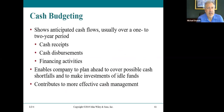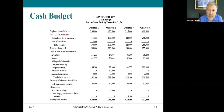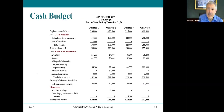Cash budgeting — which you'll see in accounting 204 or managerial accounting — shows anticipated cash flows, usually over a one or two year period: cash receipts, cash disbursements, and financing activities. This enables a company to plan ahead to cover possible shortages. The basic budget structure: start with beginning cash balance, add cash collections, subtract cash disbursements, determine if there is an excess or deficient cash balance, and borrow money if needed.